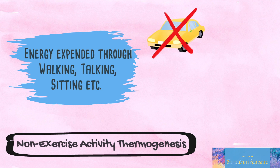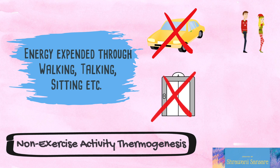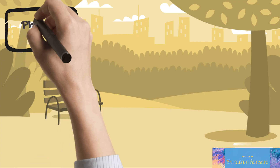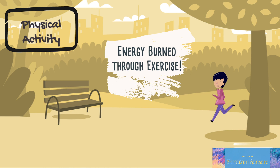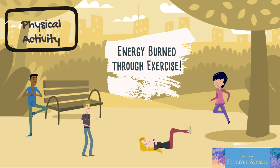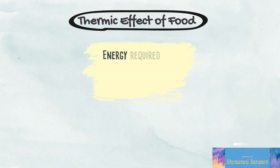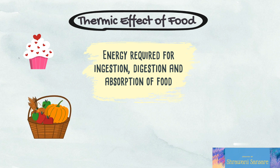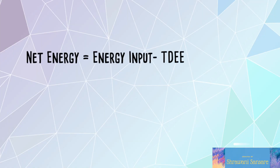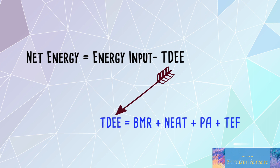To increase your NEAT, simply increase your activity level — walk instead of taking the car, or take the stairs instead of the elevator. The third component is Physical Activity, which is energy burned through exercise such as weightlifting, Zumba, dancing, jogging, or running — whatever your preferred mode is. The last component is the Thermic Effect of Food, which is the energy your body requires to ingest, digest, and absorb all your food.